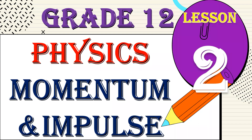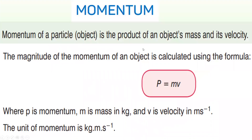Hi everyone. Grade 12 Physics, Momentum and Impulse, Lesson 2. In the first lesson, we learned about momentum — the definition and formula of momentum. Momentum of a particle is the product of an object's mass and its velocity. The formula is P equals m times V, with unit kg times meter per second.